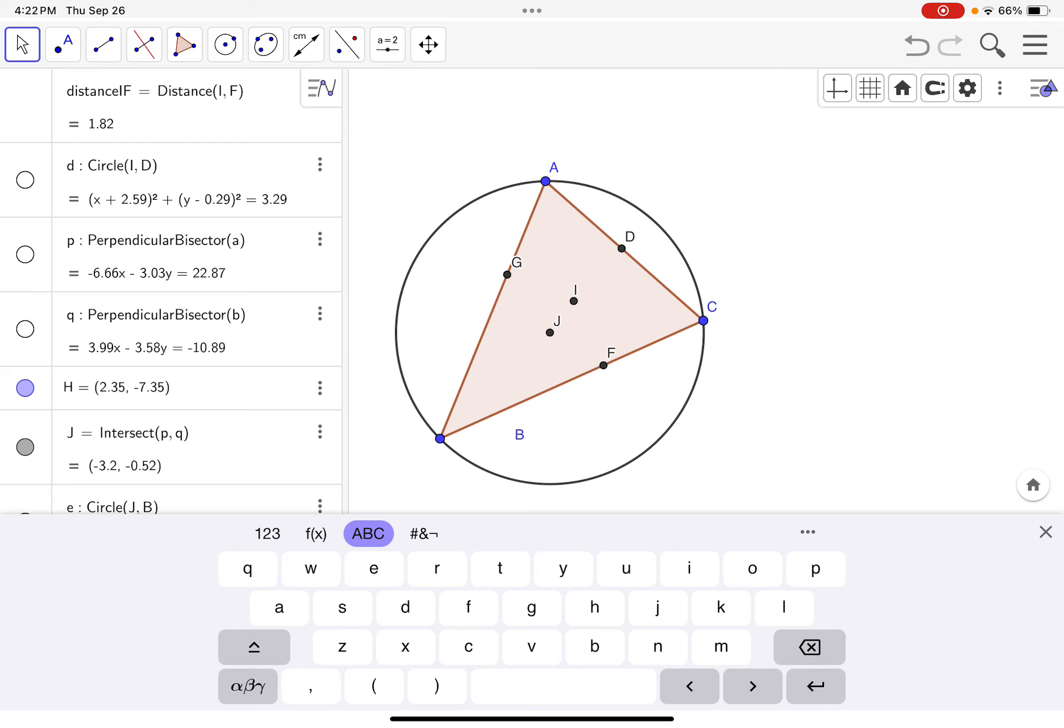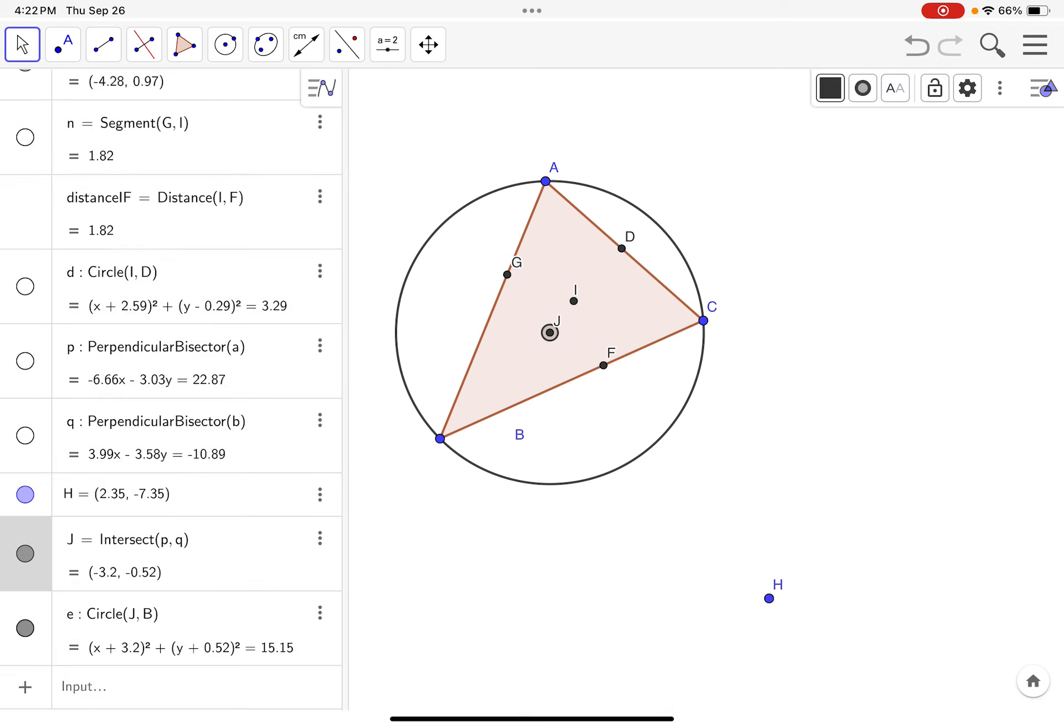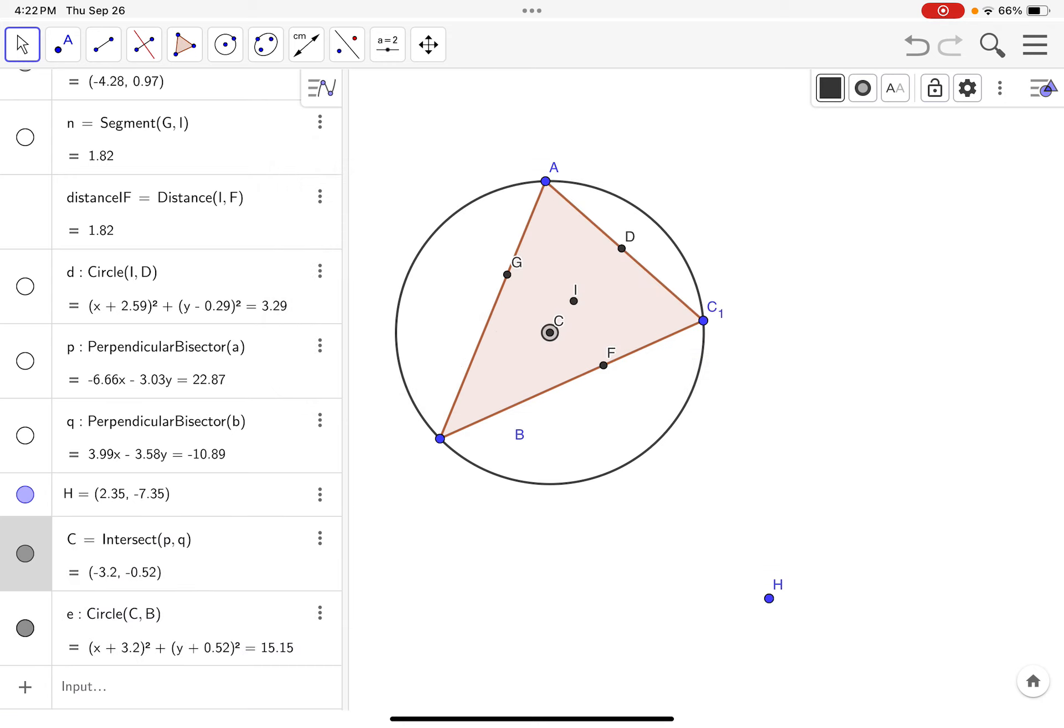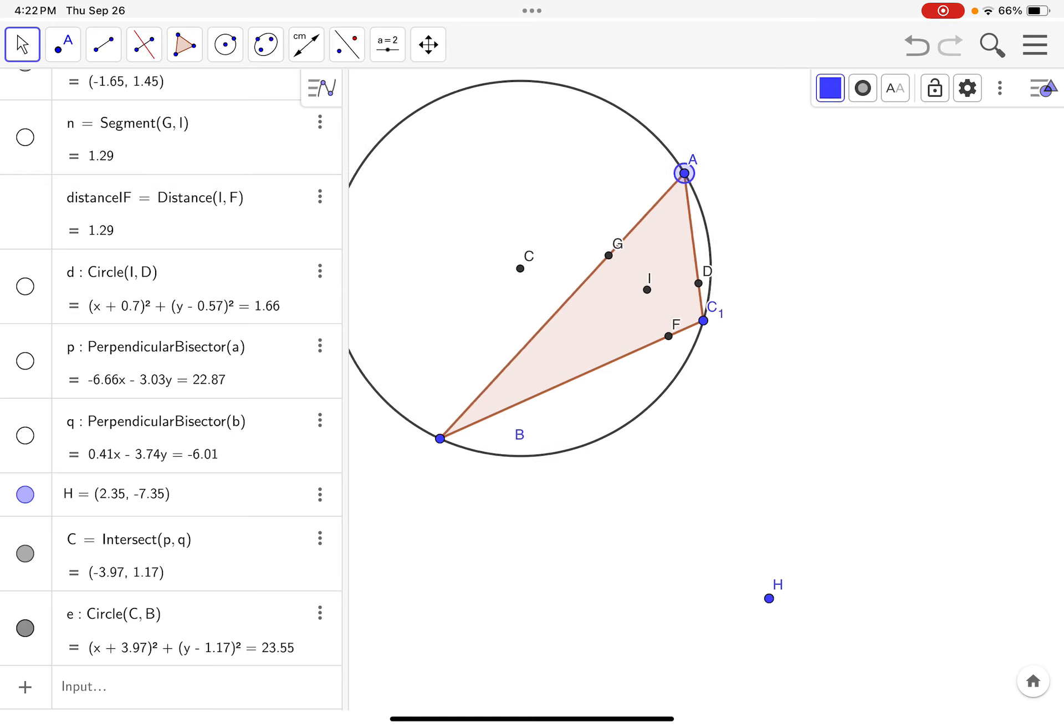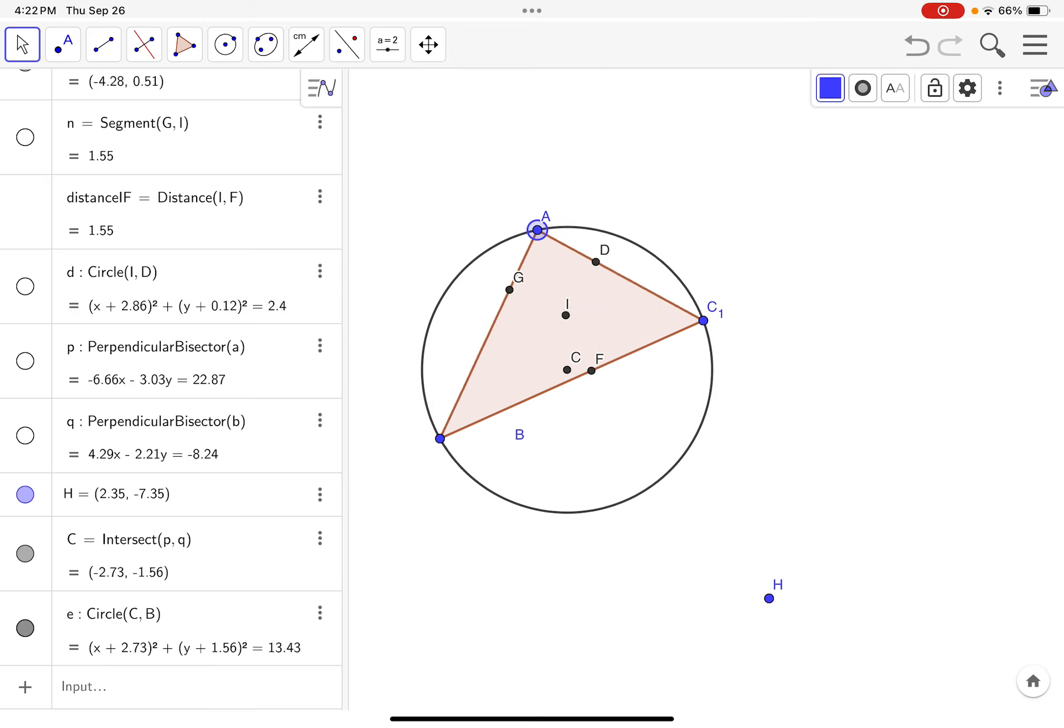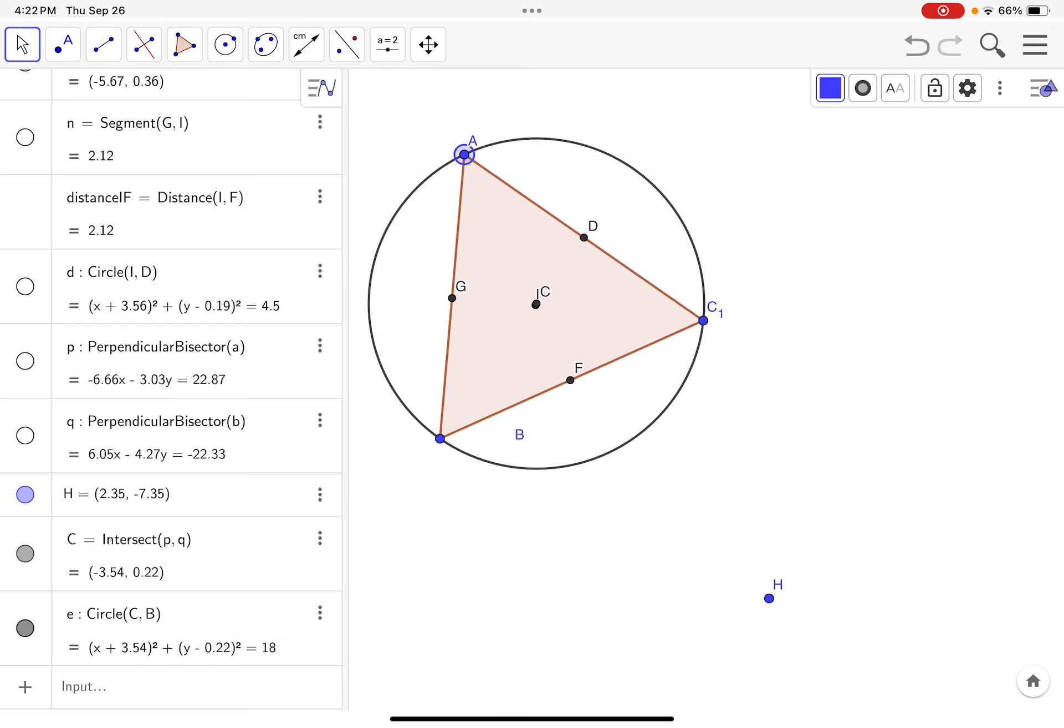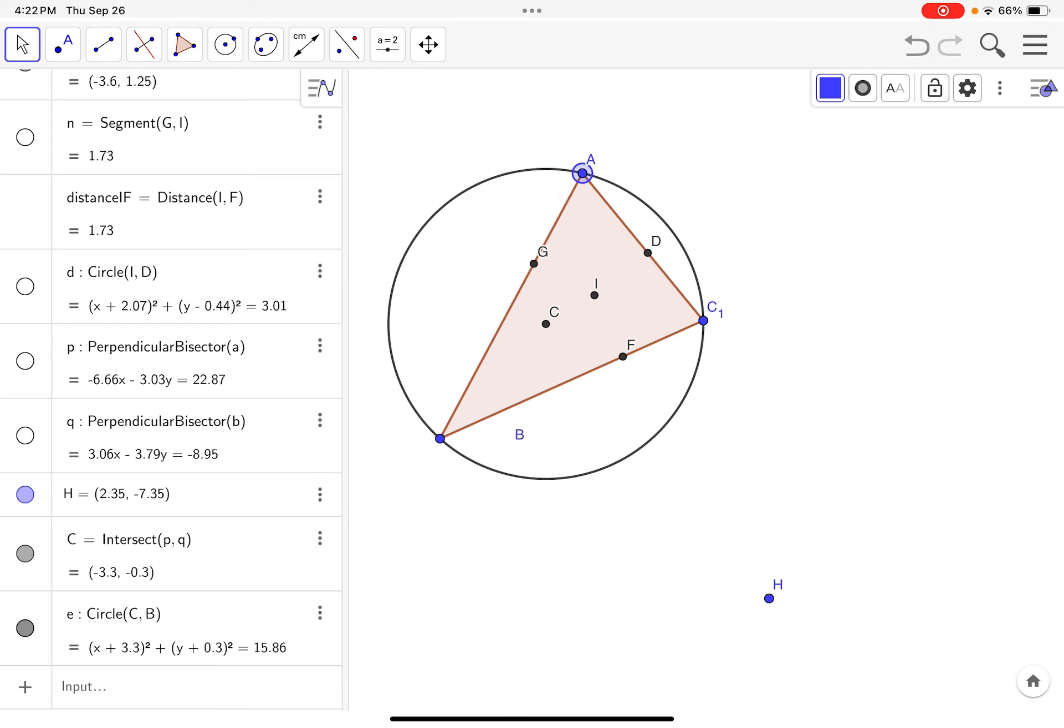Okay, so I guess point I is the incenter and point J, which we'll rename to be C. That would be the circumcenter. And the big question is, well, when do those things coincide? And it sure looks like an equilateral triangle to me. I don't know about you.